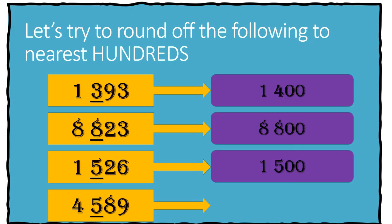Lastly, if we have 4,589 when rounded off to the nearest hundreds, it will give us 4,600.